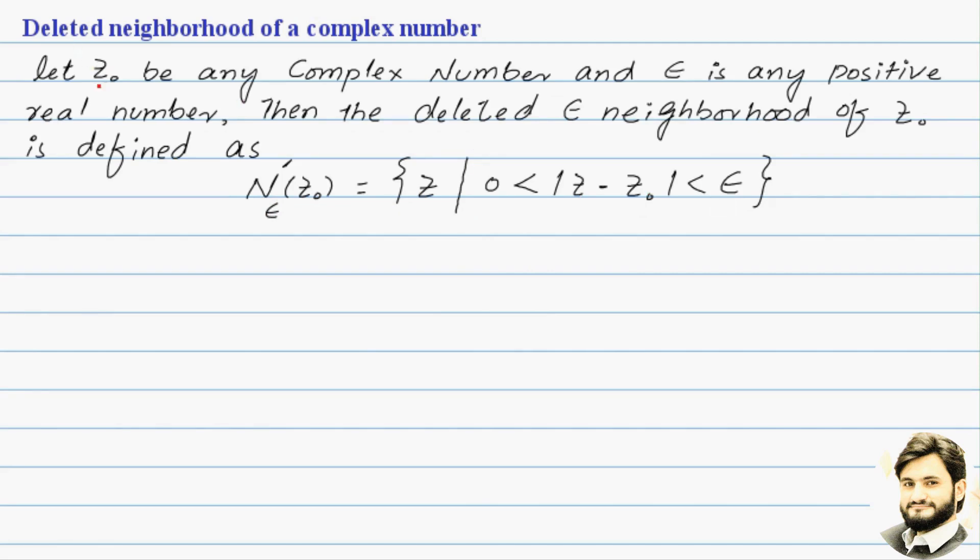z0 is a complex number, any complex number, and epsilon is a positive real number. Then the deleted epsilon neighborhood of z0 is defined as a set containing all those complex numbers whose distance from z0, if we take it, must be greater than zero and less than epsilon.